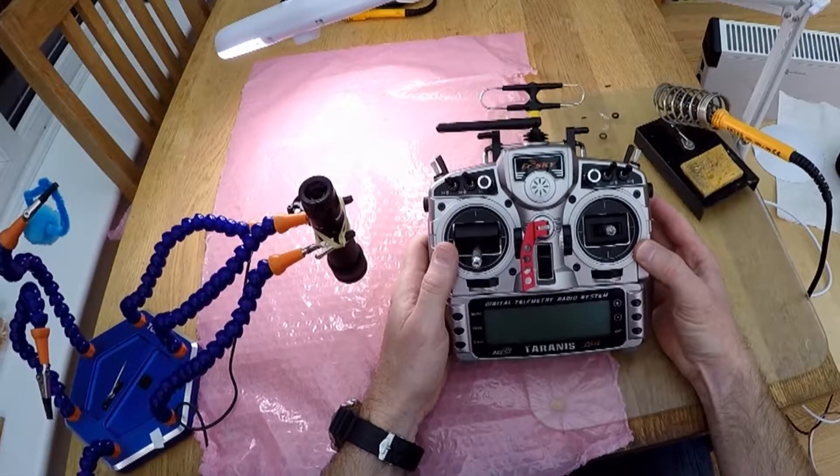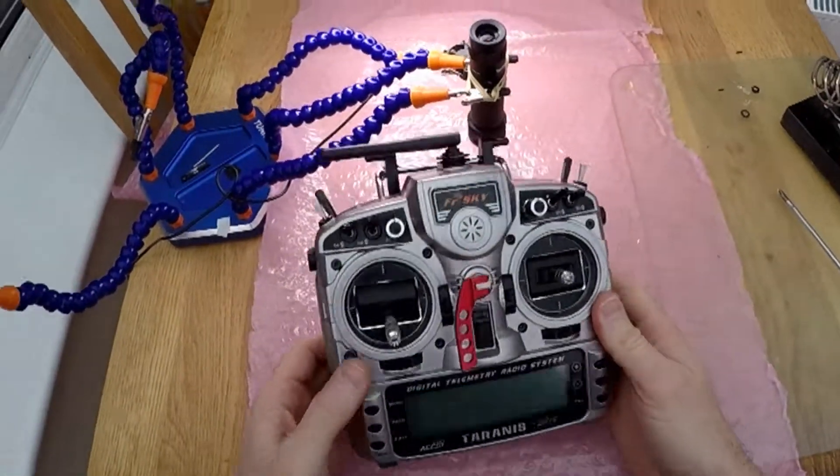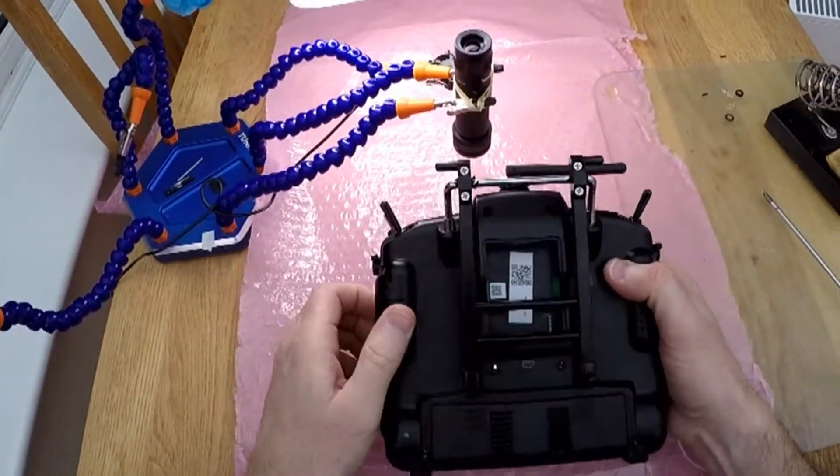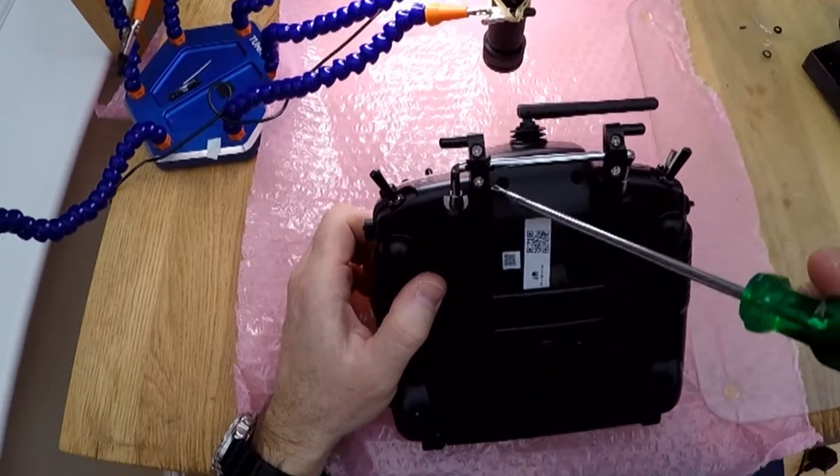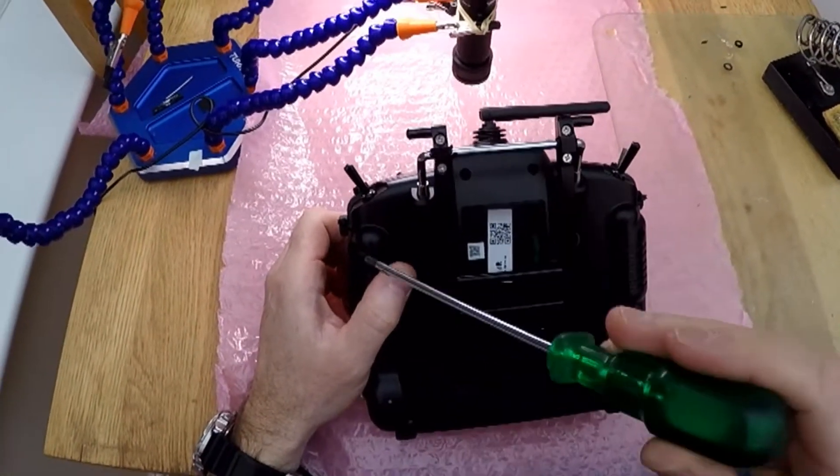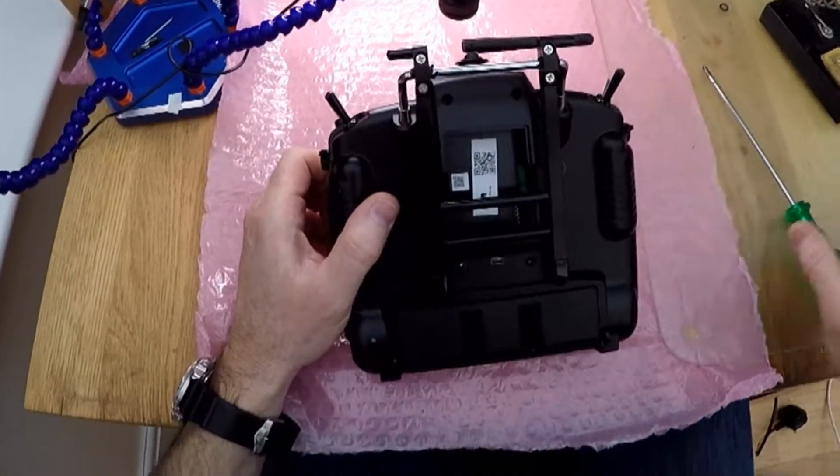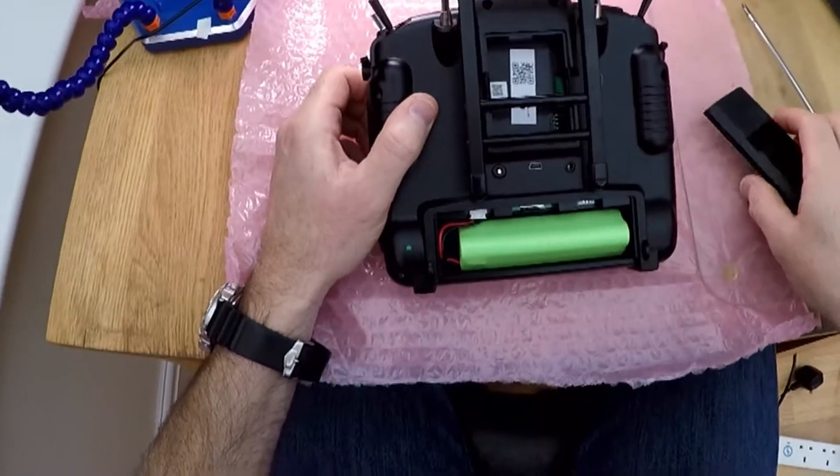So let's take this Taranis apart. You've got one, two, three, four, five, six screws to remove. But what we're gonna do first, that's right, disconnect the battery.